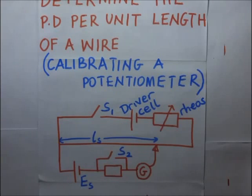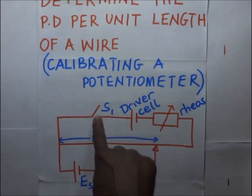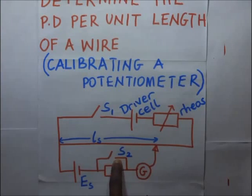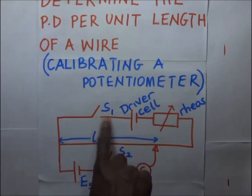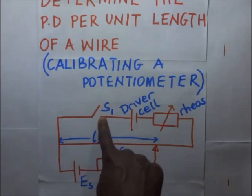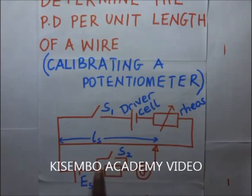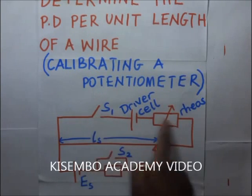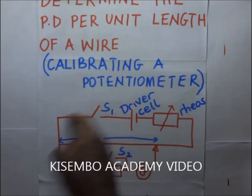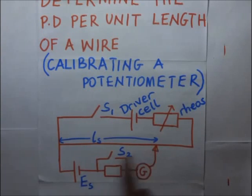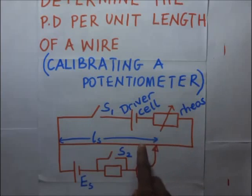So the first thing we do here at first our switches are both open. We first close switch s1 and we leave s2 open. Closing switch s1 and leaving this open means that this resistor is in the circuit and this primary driver cell is now supplying current into the primary circuit. We then slide this jockey along this wire until we obtain a point whereby there is no deflection of the galvanometer.